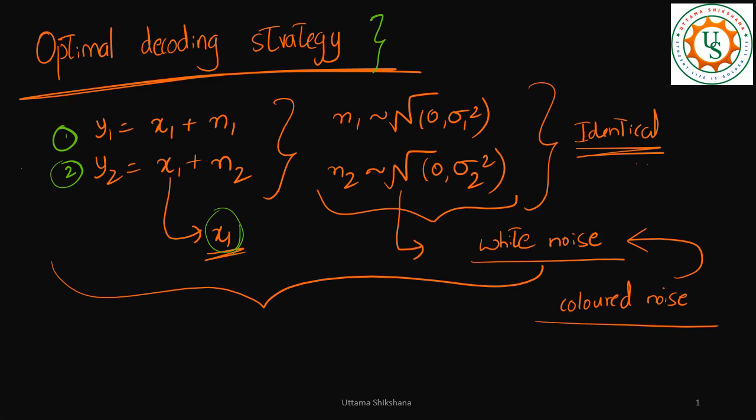But in the earlier video, in the earlier question, it was such a way that the noise is white. But now we have a statistics of noise which is having a different noise variance. So the assumption is both of them are Gaussian with zero mean but the variance is different, they are not identical. But we can consider them to be independent. So this is the question: how to decode x1?